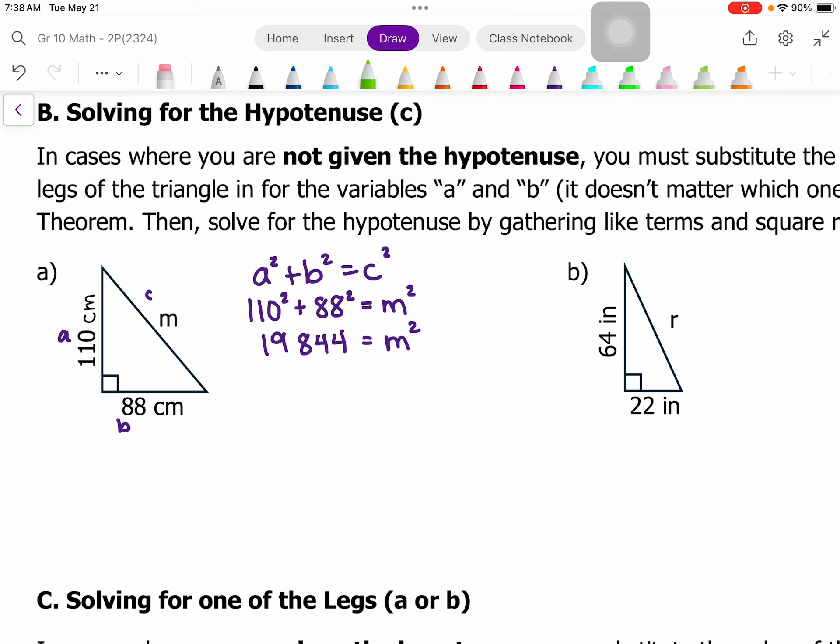So I have to do the opposite of squaring, which is to square root. So I'm going to square root both sides. When I square root the m squared, that becomes just m, and the square root of 19,844 is 140.9. And my units for both sides are in centimeters, so m is also in centimeters.